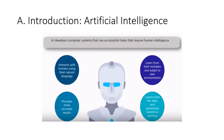Machines can imitate human intelligence and are also able to accomplish these tasks. Machines use artificial intelligence to provide more accurate results, to interact with humans using natural language, to learn from their mistakes, adapt to new environments, and also to learn from data and automate repetitive learning.